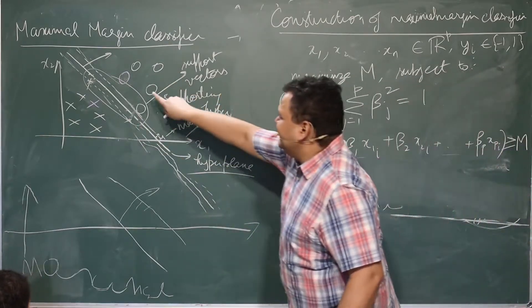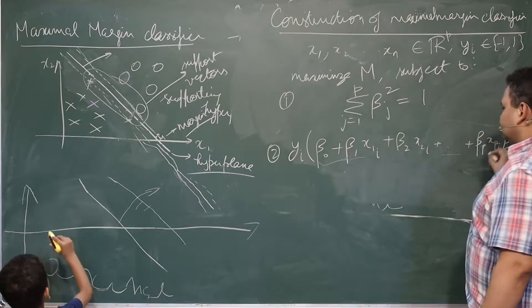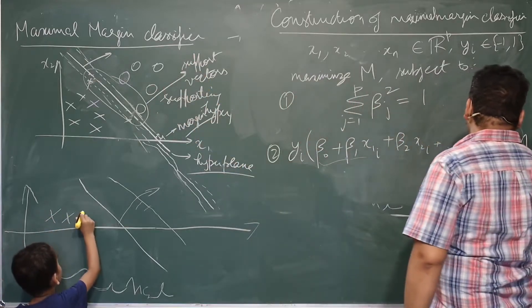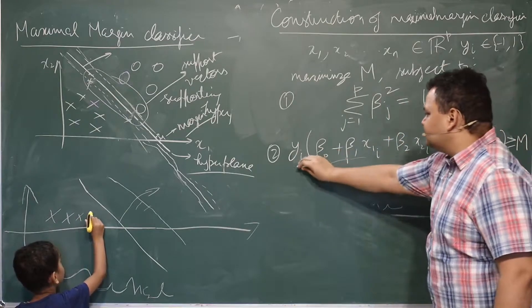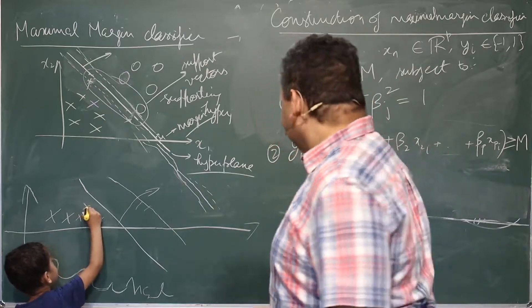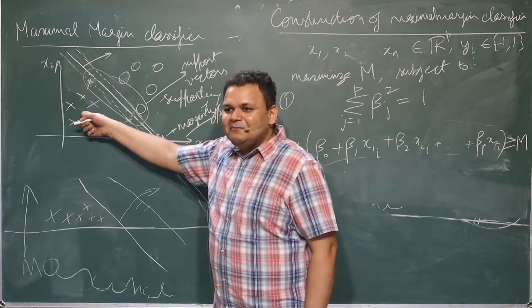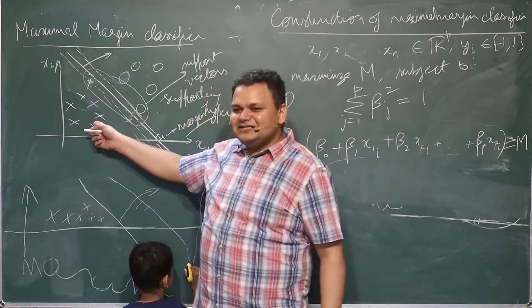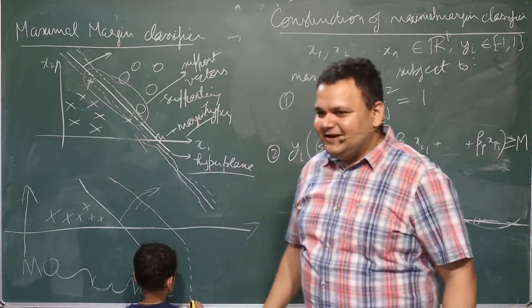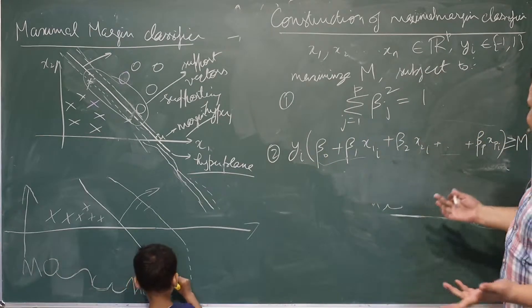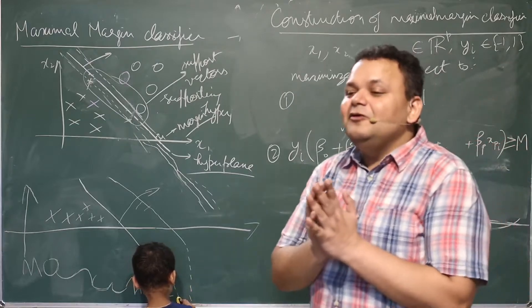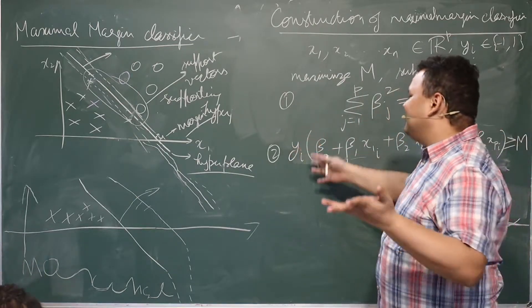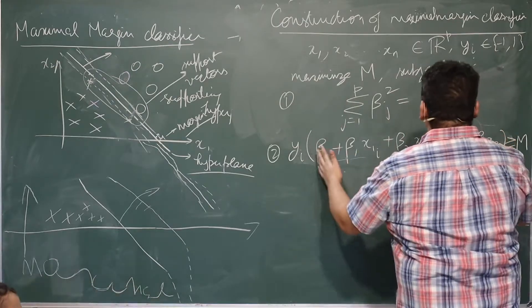If it is on the right-hand side, the expression is positive and yᵢ is plus one — so the product is positive. On the opposite side these are minus one: minus one times a negative value gives a positive quantity. So in both cases we get a positive quantity, and we are trying to maximize the product — essentially maximizing the absolute value of this particular quantity.